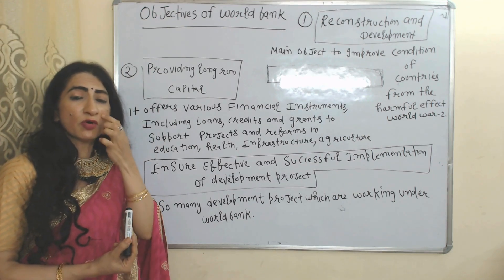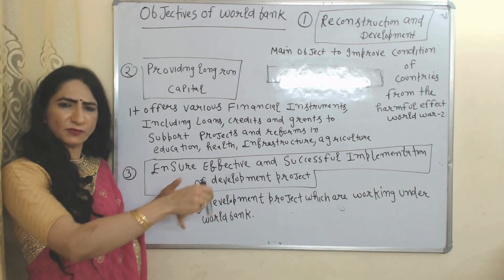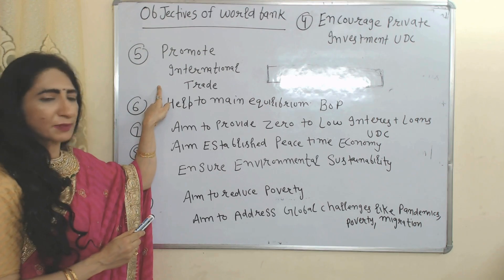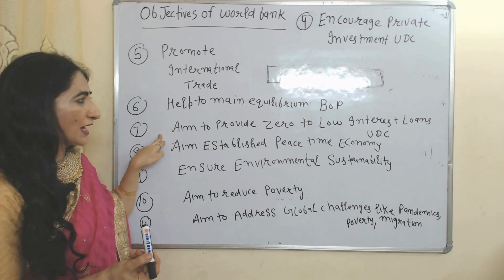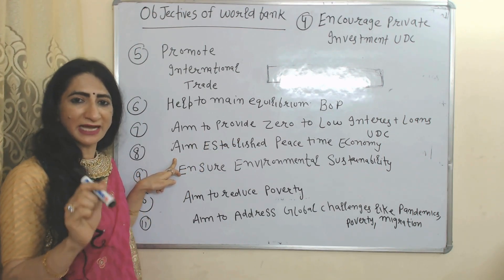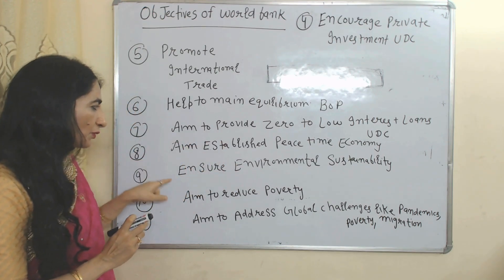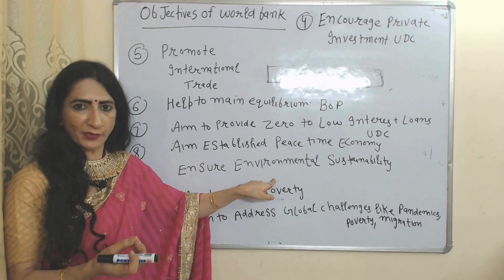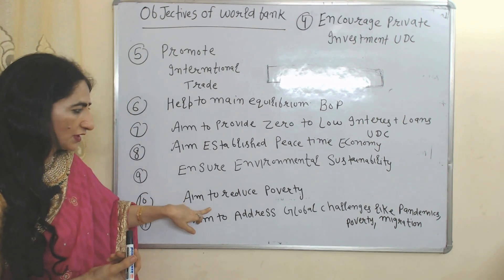Next: ensure effective and successful implementation of development projects — World Bank oversees all projects working under it. Next: anchor private investment in underdeveloped countries and promote international trade and maintain equilibrium in balance of payment. World Bank aims to provide zero to low interest rate loans to underdeveloped countries. It also aims to establish a peace-time economy — transforming war-time economy to peace-time economy. World Bank provides zero-interest loans to countries working on environmental protection, ensuring environmental sustainability. It also aims to reduce poverty and address global challenges like pandemics, poverty, and migration.